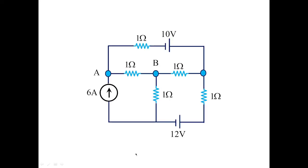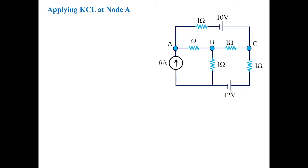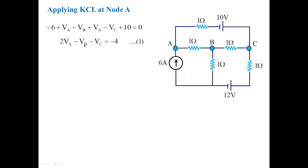Identifying nodes A, B, C, I am selecting branch currents I1, I2, I3, I4, I5, and I6 randomly. Applying KCL at node A: minus 6 plus (VA minus VB)/1 plus (VA minus VC plus 10)/1 equals zero, giving the equation 2VA minus VB minus VC equals minus 4. This is equation 1.